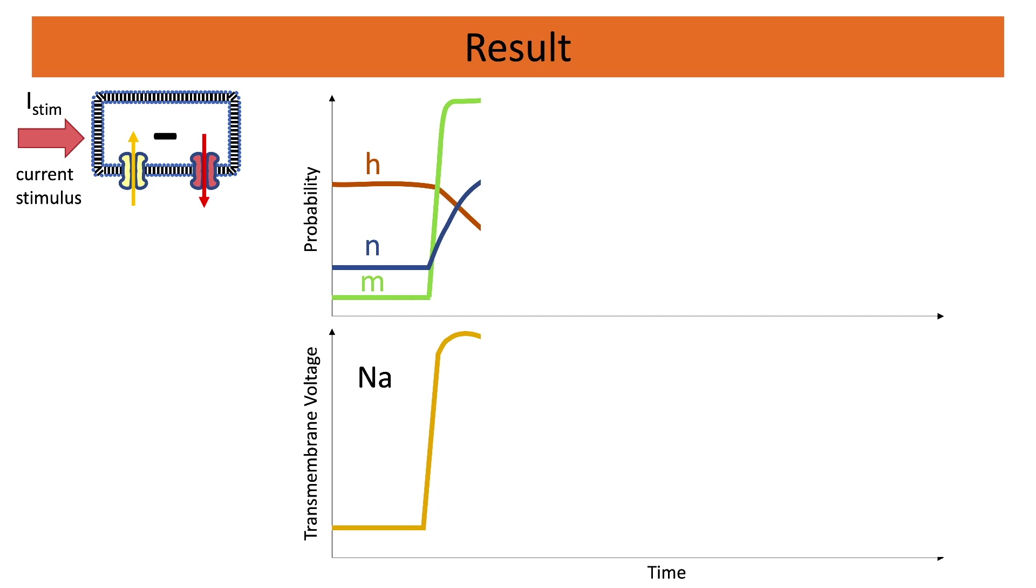We therefore see a further change in the transmembrane voltage. In the second stage we see that the M gates stay open, however the H gates start closing, so the sodium inflow is reduced. At the same time more N gates open, and the N gates represent the potassium channels.